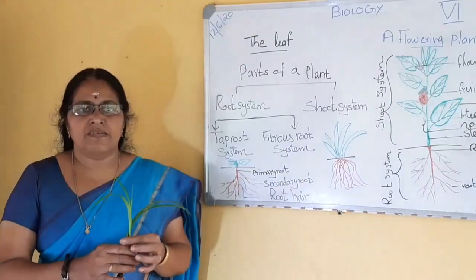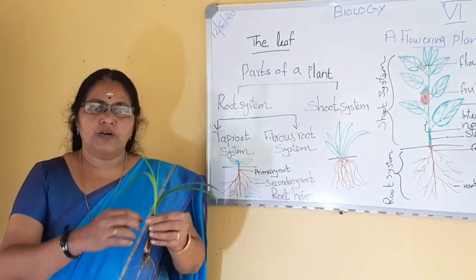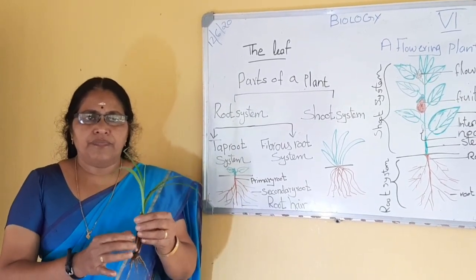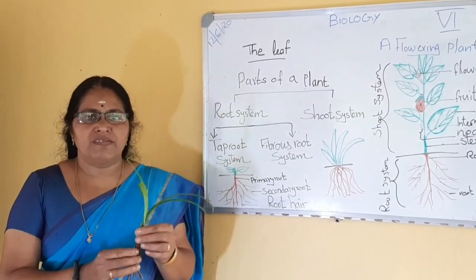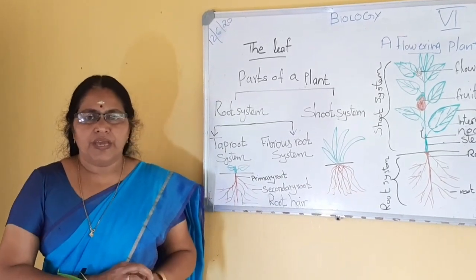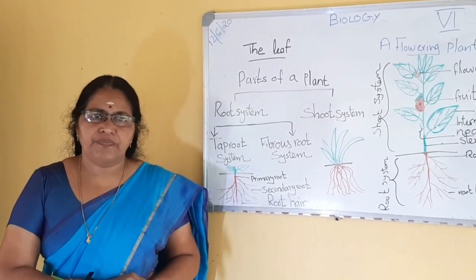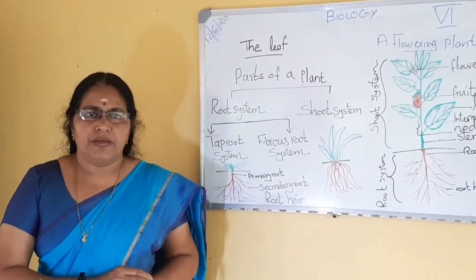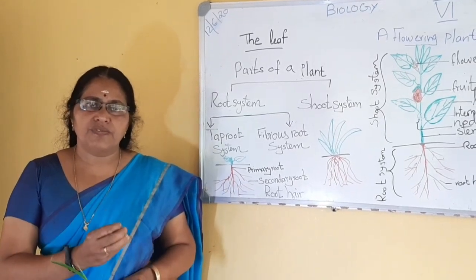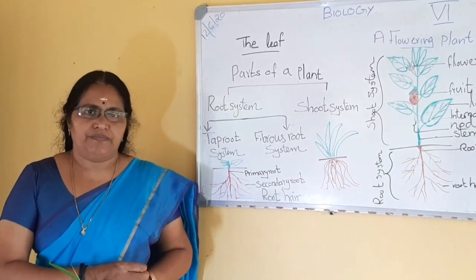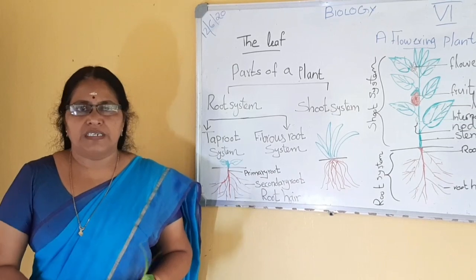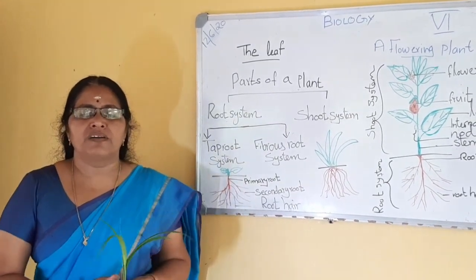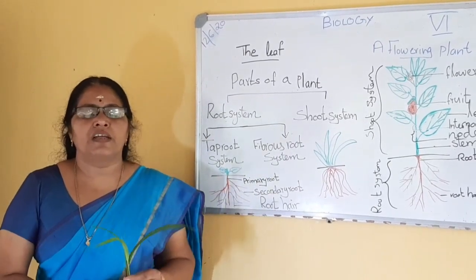The third function is to conduct this water to the upper parts of the plant. And one more function is that in some plants, the roots store the food. Examples include carrot, radish, turnip, and beetroot — in all these, the roots store the food. Then, one more function of the root is that the roots bind the soil particles together.